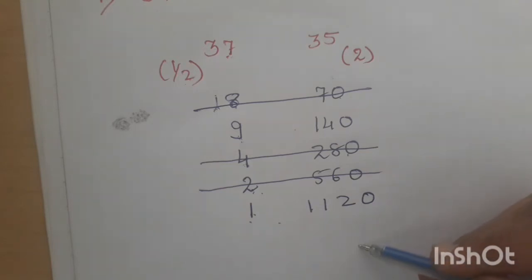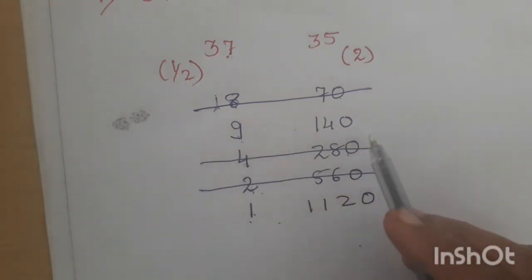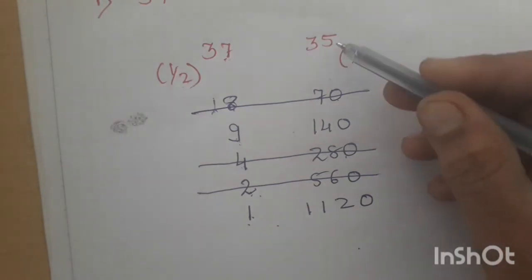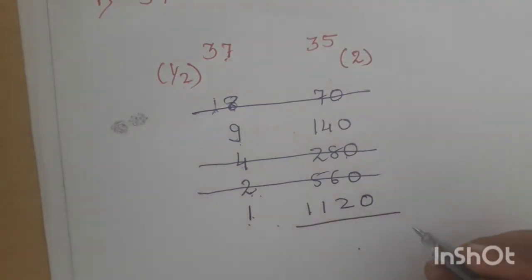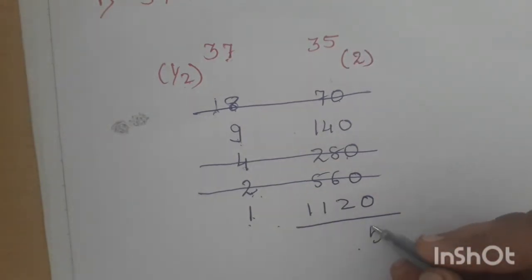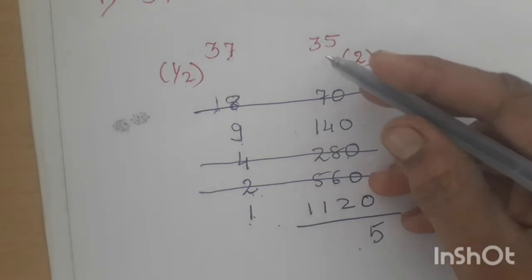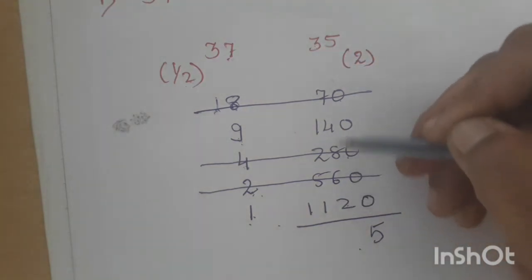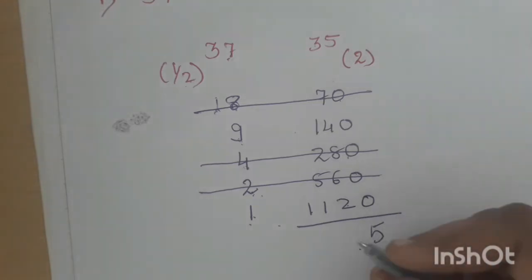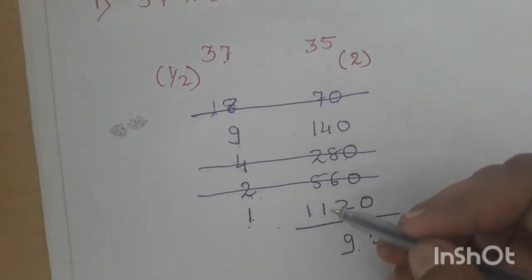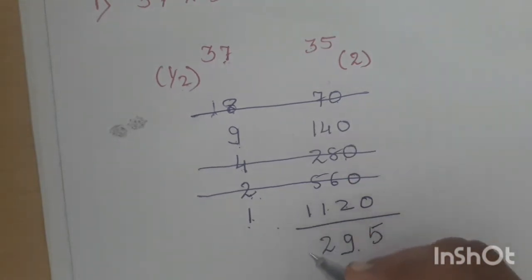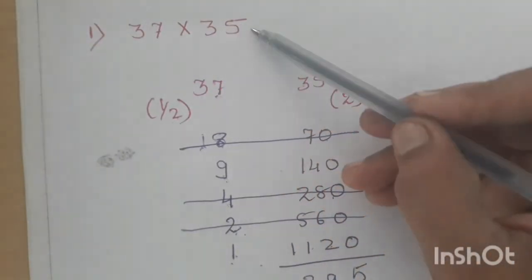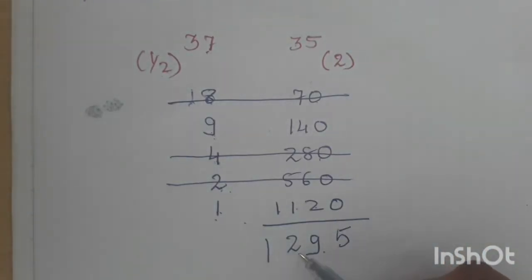The numbers in the doubles column corresponding to the remaining rows are added to get the final product. So I need to add the rest of the numbers: 35, 280, and 1120. Adding these gives 5, then 3 plus 2 plus 4 is 9, then 1 plus 1 is 2, and 1. So your answer for 37 into 35 is 1295.